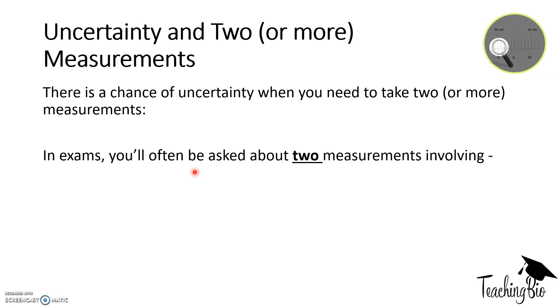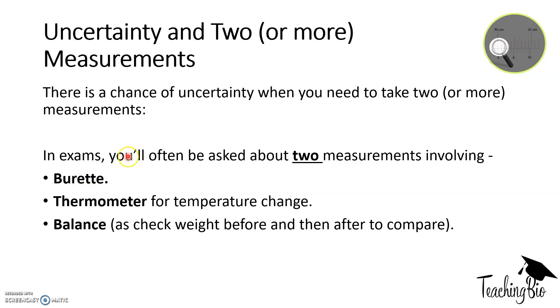Now sometimes, in questions, you may be asked circumstances where you need to take two or more measurements. So it's the chance of uncertainty where you take two or more because you might take a reading before and a reading after. Some example scenarios are reading off burettes when you're doing titrations because you'll record the initial volume and the final volume. Thermometers when you check for temperature change, so the first reading and the last reading. And also balances, when you check the weight of something before and then after. There will obviously be a difference between the two. So because you're taking two measurements, you've got to account for two sets of uncertainty. We do this by timesing by two.